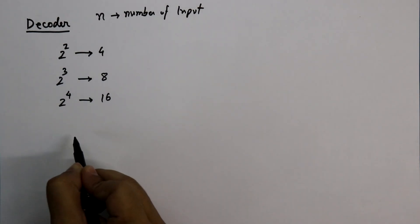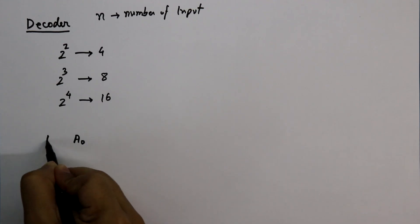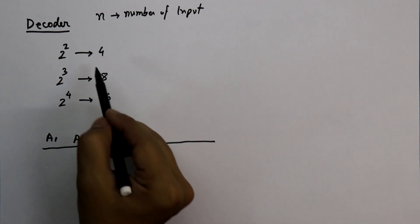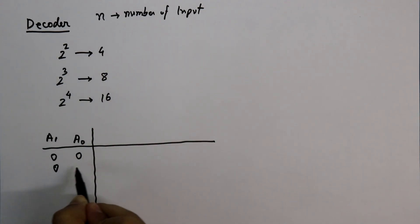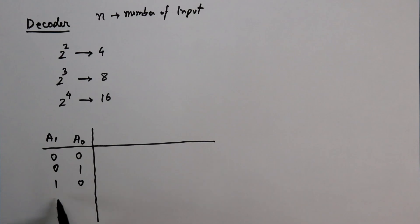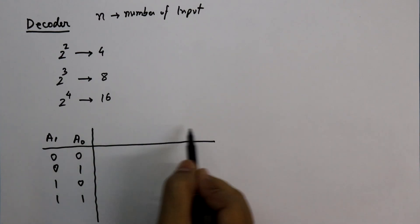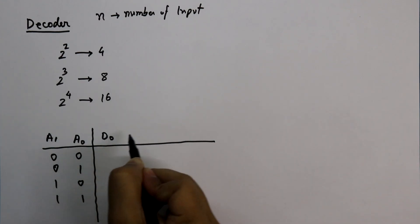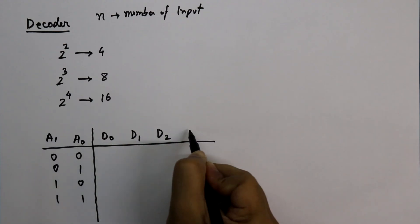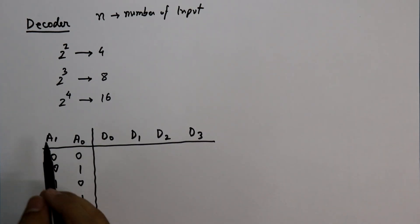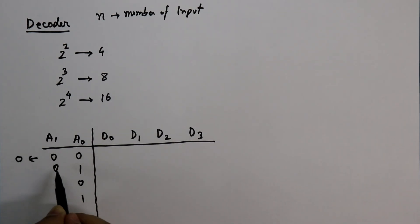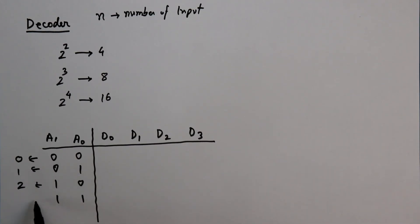Now let's make the truth table. The two inputs will be A0 and A1. We will have four conditions: 00, 01, 10, and 11. The outputs will be D0, D1, D2, and D3. On this side I am writing the decimal value — 00 means 0, 01 means 1, 10 means 2, and 11 means 3.